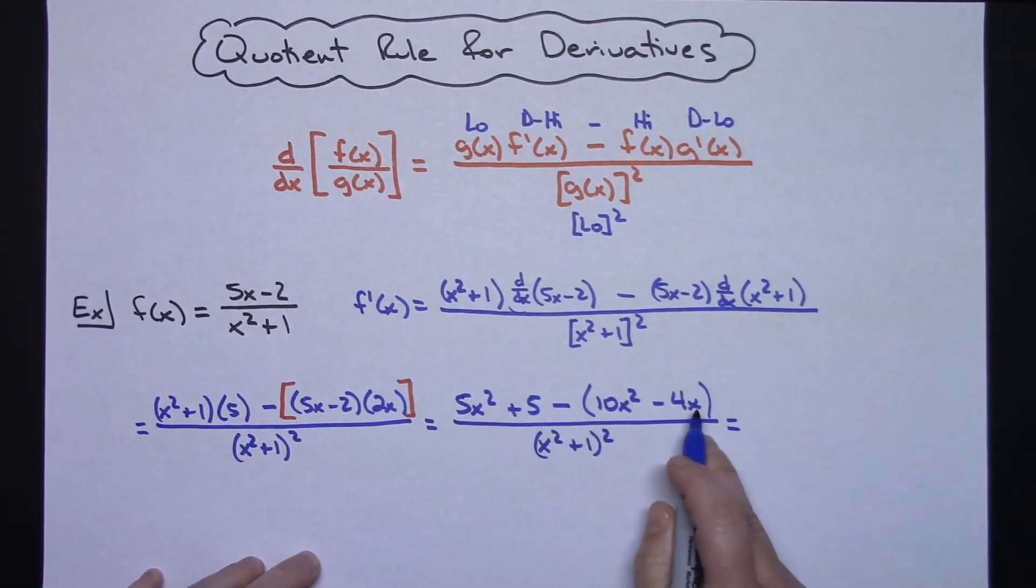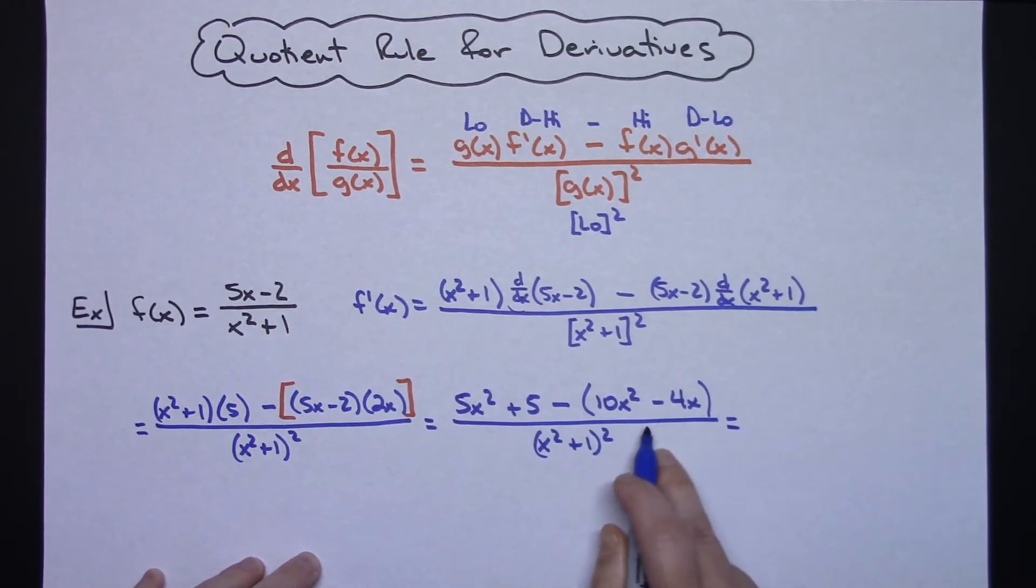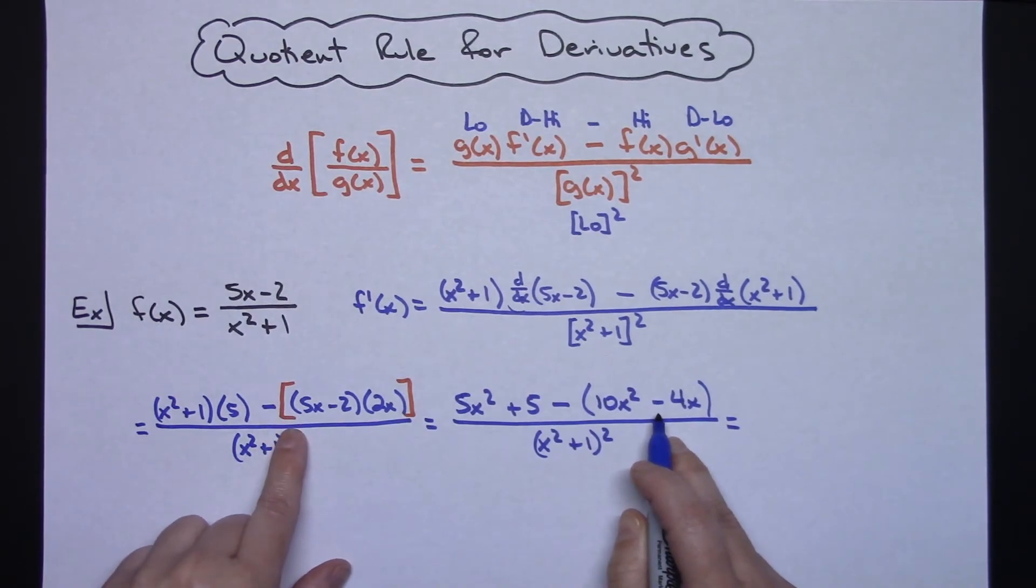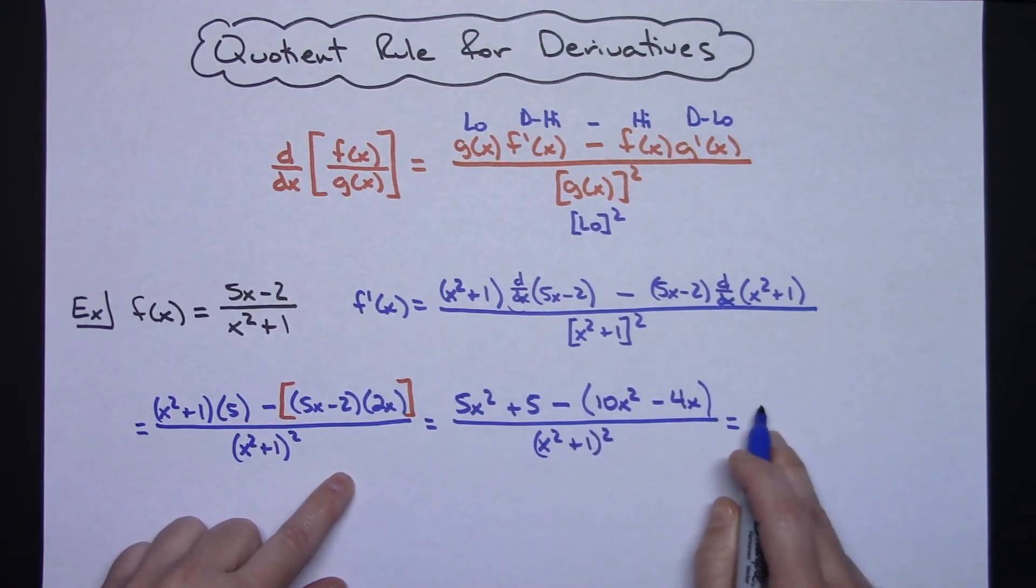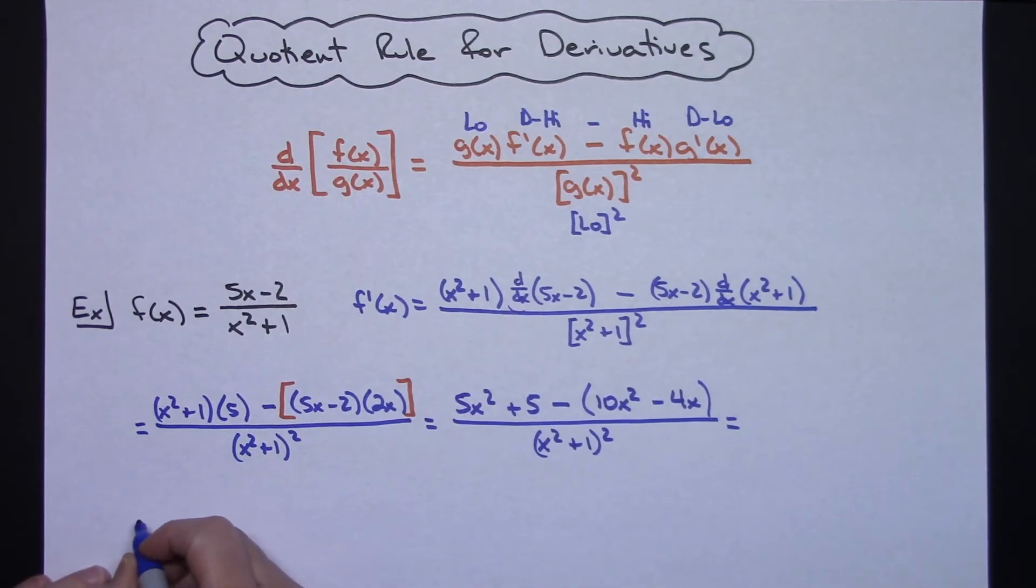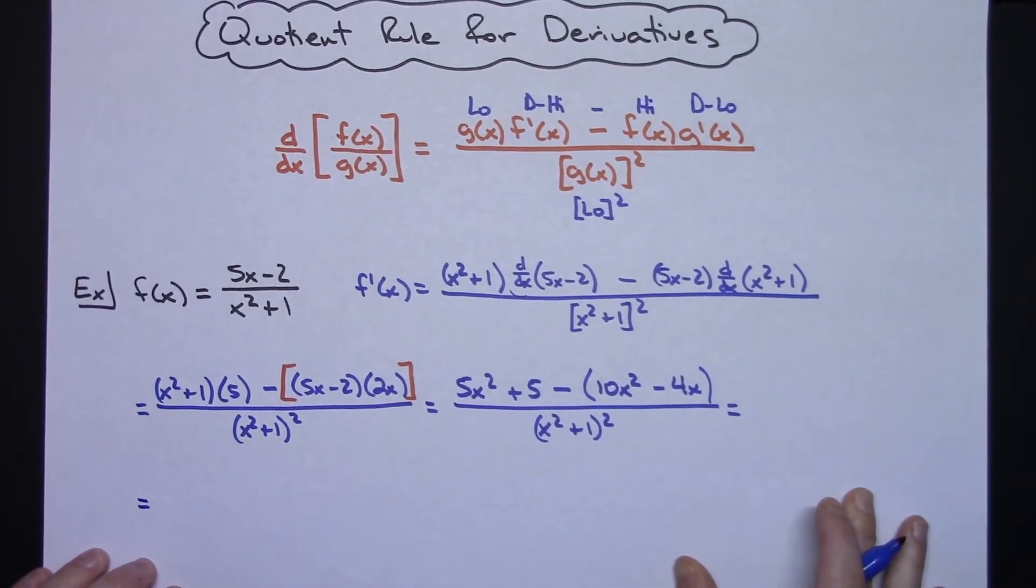Okay, now probably wouldn't hurt to go through and change the signs of these two right here and right there. The sign on this one is the one that's going to create problems if you forget you are subtracting everything to the right. Okay, so we'll go one more time here, let's move up just a little bit.